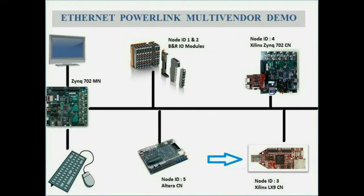Slave 3 uses a Xilinx LX9 board distributed by Avnet. Here we show the application running on a MicroBlaze processor. This slave showcases the minimum footprint needed to run Powerlink. Slave 4 uses a Zynq 702 board, showcasing the technology on Xilinx's latest platform.